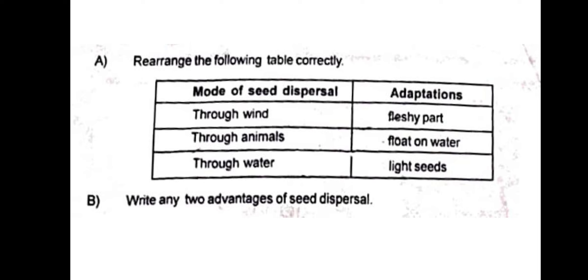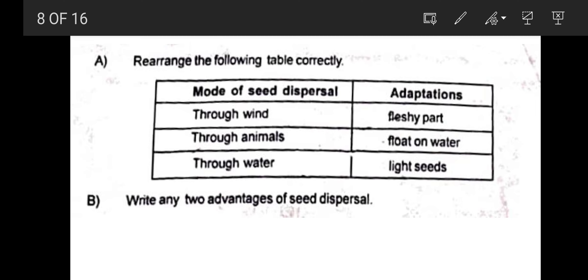We will discuss the first class: Mode of dispersal and adaptation. The modes include through wind, through animal, and through water. Now we will do the matches. Through wind — the adaptation is light seeds.